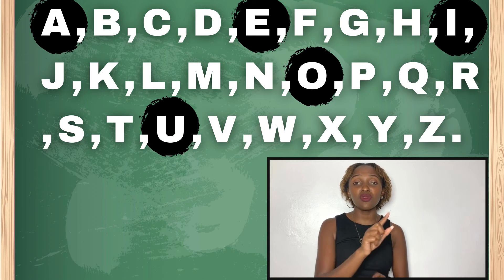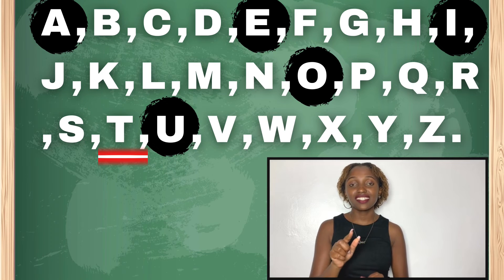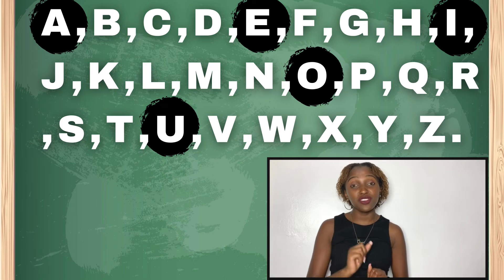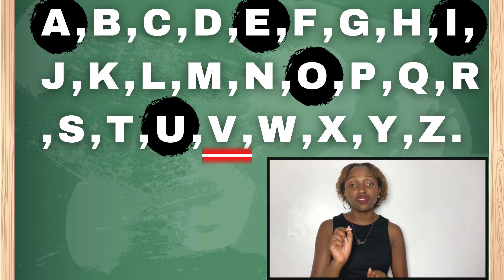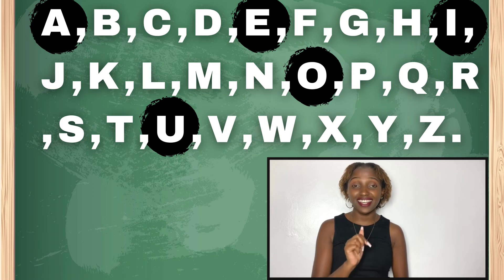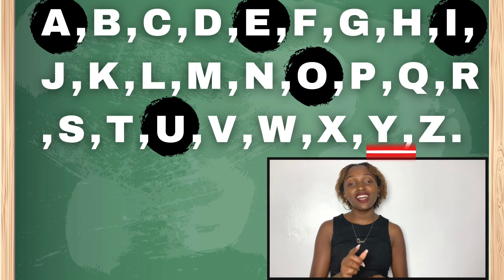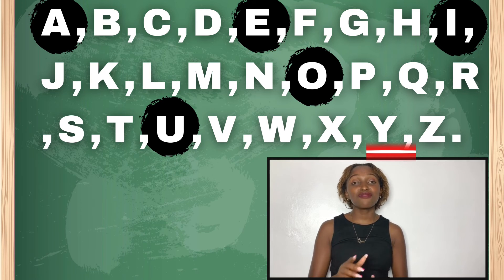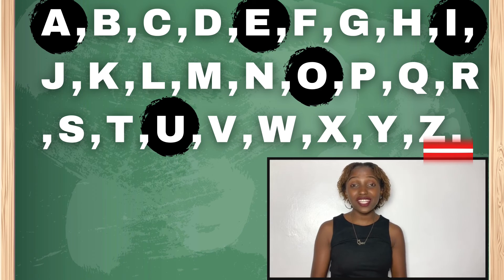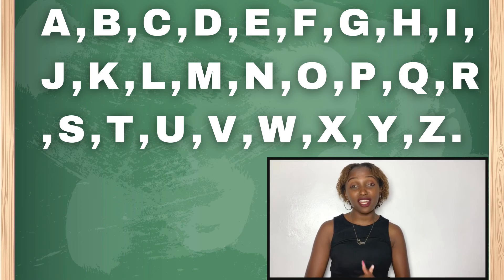Sasa tukitoka kwa S, tunaenda kwa T. Tena kuna U. U ni irabu. Kwa hivyo tunatoka U, tunaenda kwa V, alafu W. Tena hatuna X katika kiswahili, kwa hivyo tunairuka. Tunaenda kwa Y, alafu tunamalizia na Z.